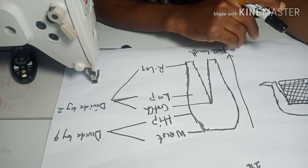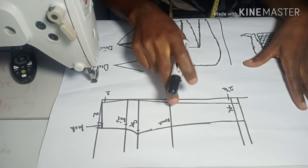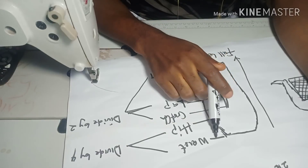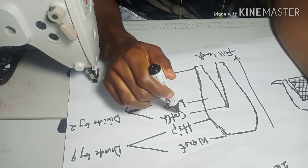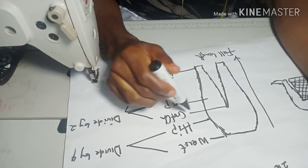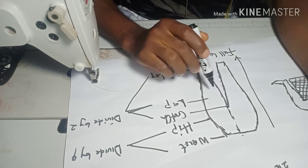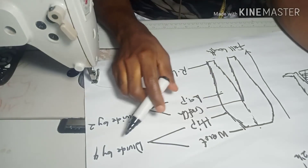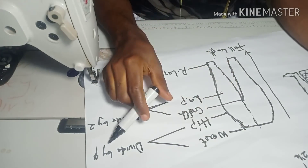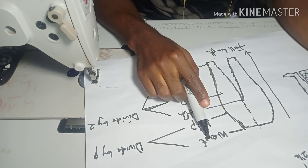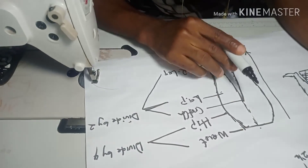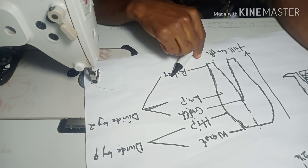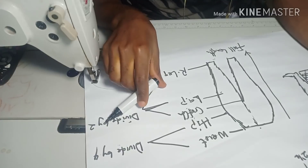If you look at this diagram, I have three different diagrams here. To cut a pant, these are the measurements you need: your waist measurement, your hip measurement, your lap measurement, your crotch measurement — which is from here to here — then your lap measurement, the full length, and the round leg measurement. When cutting, you're going to divide your waist by 4. I'll explain that when I get to this diagram. You divide waist and hip by 4, then your lap measurement and the round leg, which is on the crotch, is going to be divided by 2.